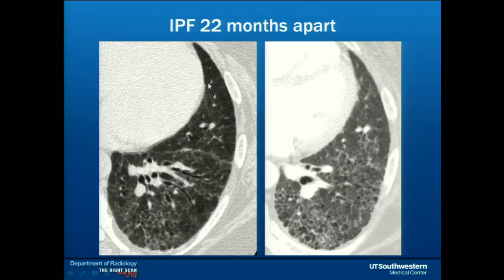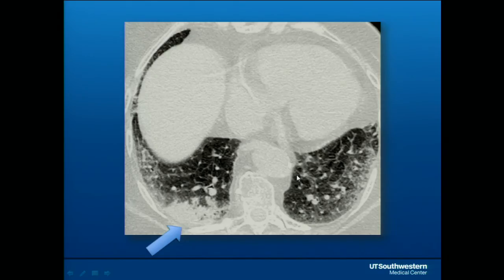This slide shows how fast the progression of fibrosis has occurred in this patient. You can see traction bronchiectasis and reticulations, and over a period of 22 months the honeycombing, bronchiectasis, and fibrosis had progressed. These patients are also more prone to get malignancies, and serial high-resolution chest CTs can help detect bronchogenic cancers in these patients.